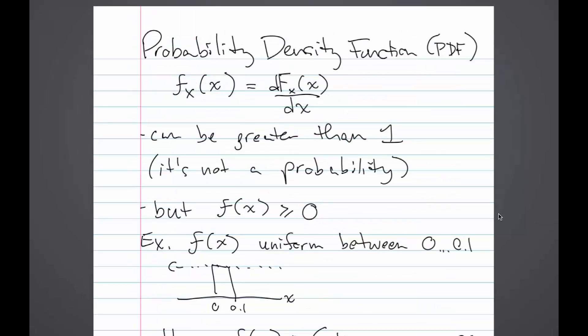Now let's talk about the other useful function when we're talking about continuous variables. This one's called the probability density function or the PDF. We usually denote it by little f of x and it is defined as the derivative of big F of x with respect to x. So it's like the slope of big F of x.